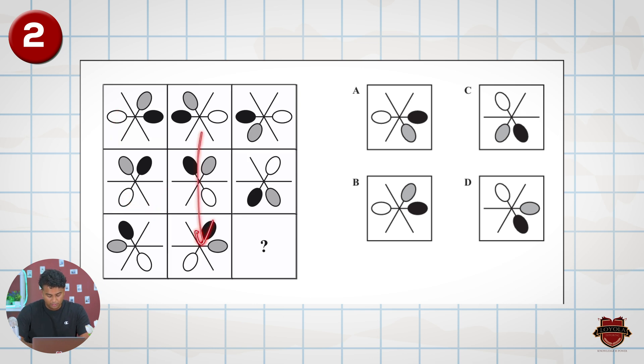In the middle column the black goes plus one plus one. The gray goes plus one plus one and the white also moves plus one plus one as well. So it's either going plus one each time clockwise or minus one each time anti-clockwise.